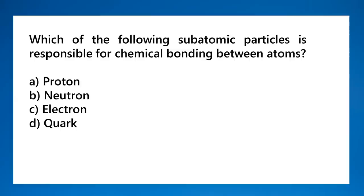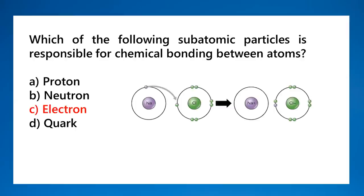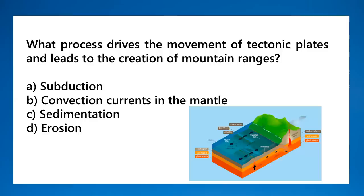Which subatomic particle is responsible for chemical bonding between atoms? That is the electron. Whether the bond is covalent (sharing) or ionic (transferring), it is always the electrons involved in chemical bonding.